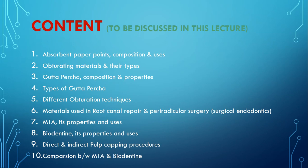In today's lecture we will talk about absorbent paper points, their composition and uses, obturating materials and their types, gutta-percha — its composition, properties, uses, and types — different obturation techniques, materials used in root repair and periradicular surgery (surgical endodontics), MTA and its properties and uses, direct and indirect pulp capping procedures, and a comparison between MTA and biodentine.